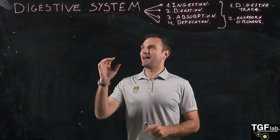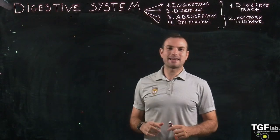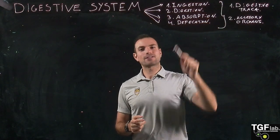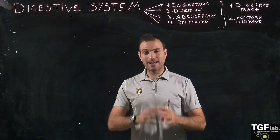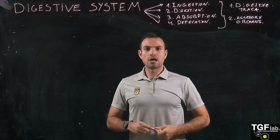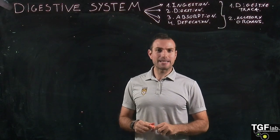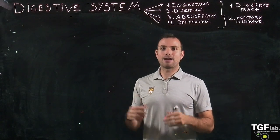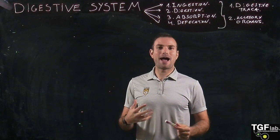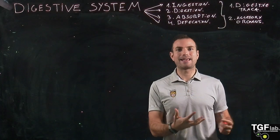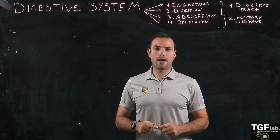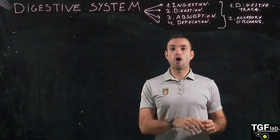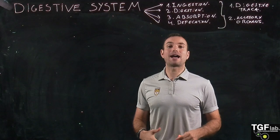Hello everyone and welcome to the second part of this lecture about the digestive system. We are going to look at the process of digestion, specifically the process of secretion — the secretion of hydrochloric acid, which is fundamental for the degradation of food and for pepsin to act on the degradation of proteins, and also the secretion of mucus and bicarbonate for the protection of the digestive tract endothelium.